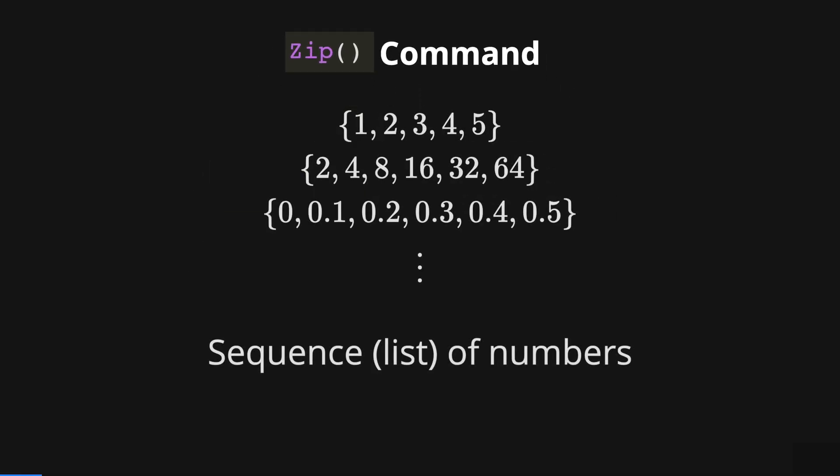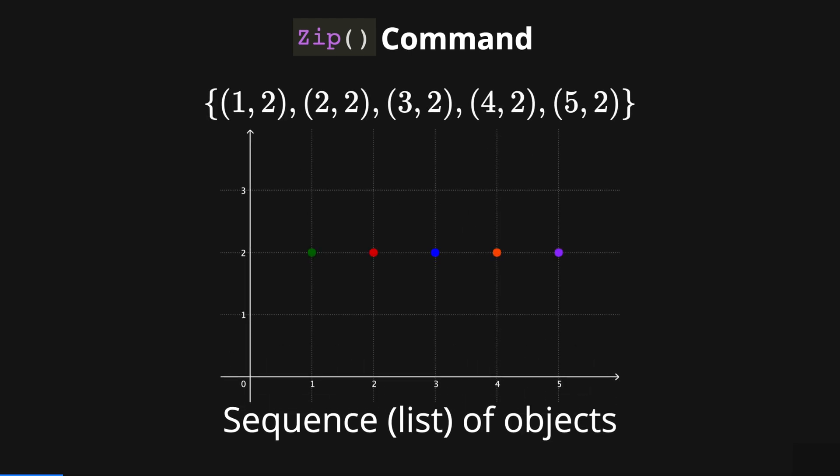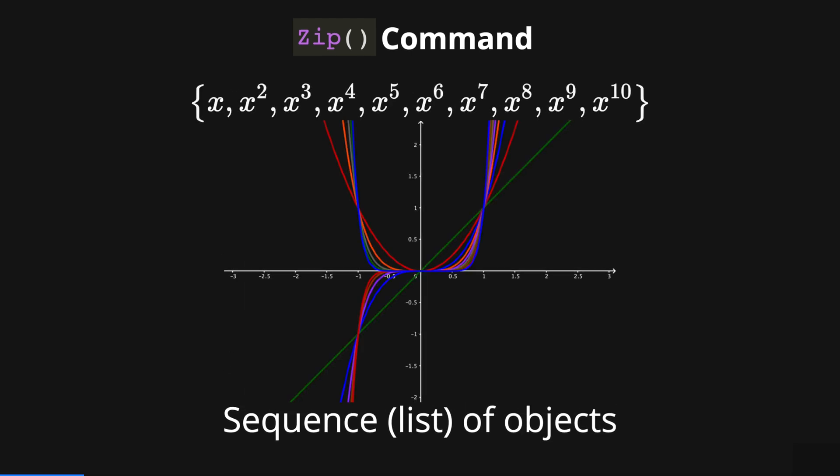With the zip command we can create sequences of numbers or lists of numbers. Also we can create sequences of objects like points, functions, polygons.